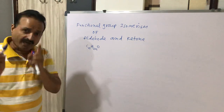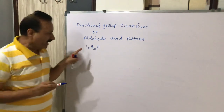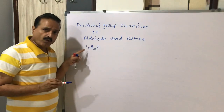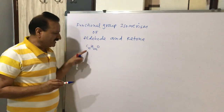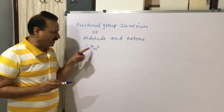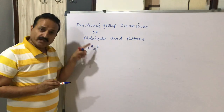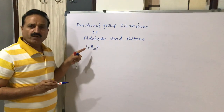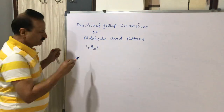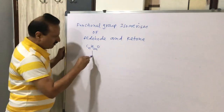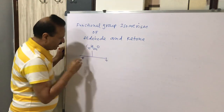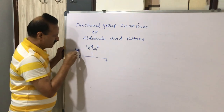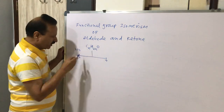We will prove this. The common molecular formula of aldehyde and ketone is CₙH₂ₙO. We can prepare both aldehyde and ketone from this common molecular formula. Suppose N equals 3.